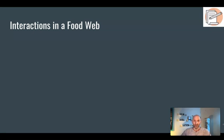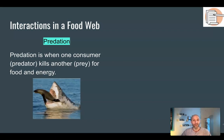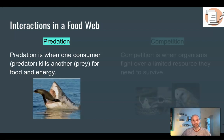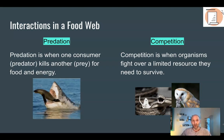Organisms also interact within food webs in ways beyond just eating each other. One obvious interaction is called predation — when one consumer, the predator, kills another consumer, the prey, for food and energy. Another type of interaction is called competition — when organisms fight over a limited resource that they both need. For example, a snake and an owl aren't directly eating each other; instead, they would be fighting over the same food source, in this case mice. So they're competing based on the food that they need.